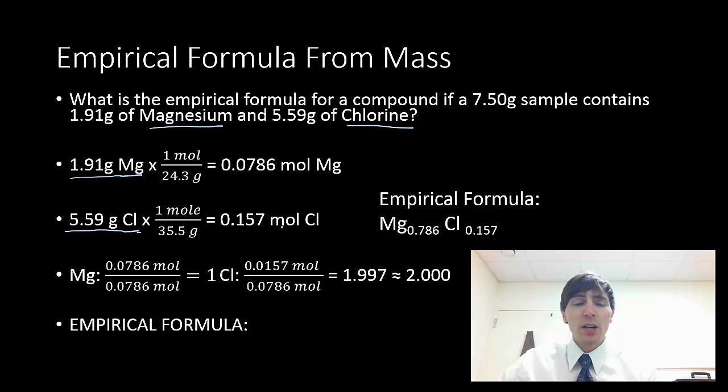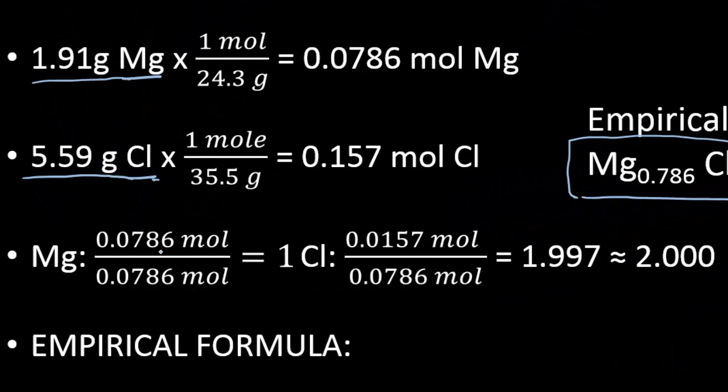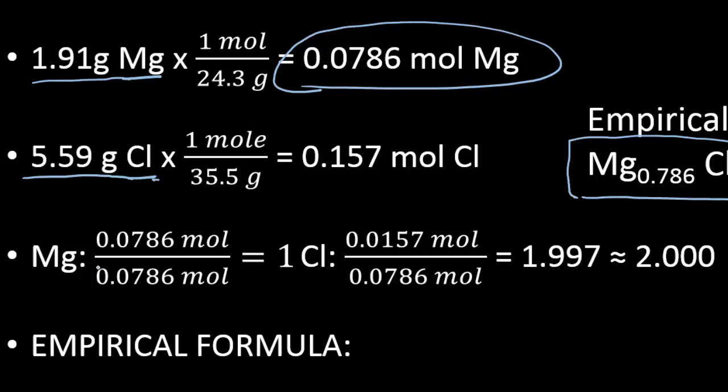Okay, so we've done step 2. Next, we're going to do step 3, and we're going to look at what our formula is right now, and we need to get it to a whole number. So if I were to leave this as is, my ratio is I have 0.786 moles of Mg per 0.157 moles of Cl. The problem is I can't have a partial formula. I can't have 0.786 of an atom of magnesium. So we need to get to the lowest whole number ratio. To do this, we just divide each number of moles by the lowest number of moles.